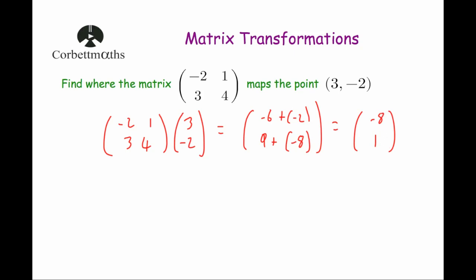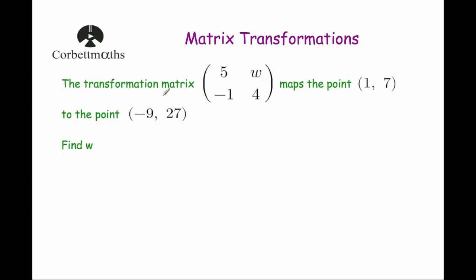Our next question: the transformation matrix 5, w, minus 1, 4 maps the point (1, 7) to the point (−9, 27). Find w. We've been told the point that's going to be moved and where it moves to — we just need to find this missing number in the matrix.